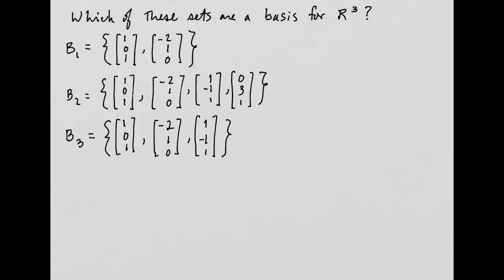Any basis in R³ has to have exactly three vectors in it. That's a really handy theorem. Any basis for a vector space has to have the same number of vectors as the dimension of the vector space. So if you have a five-dimensional vector space, any set that's a basis for that vector space has to have exactly five vectors in it, no more, no less.